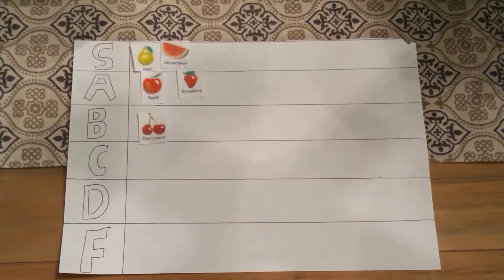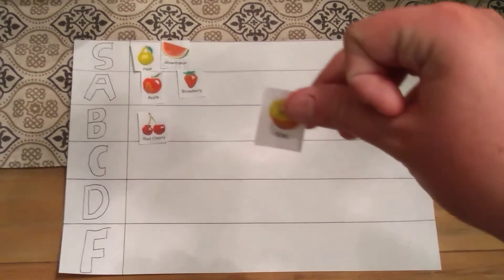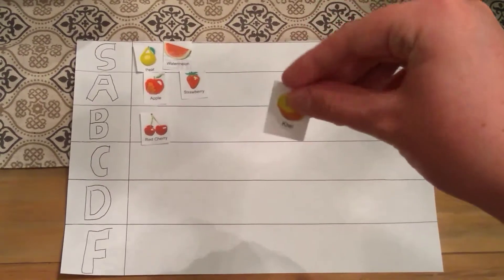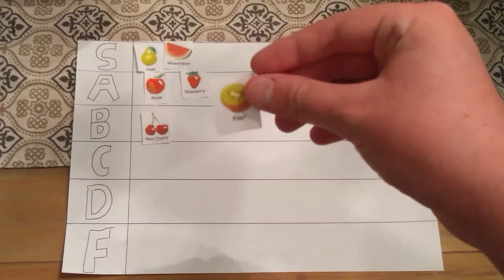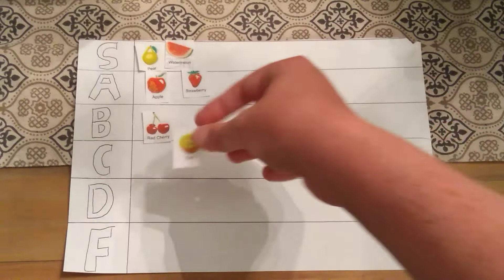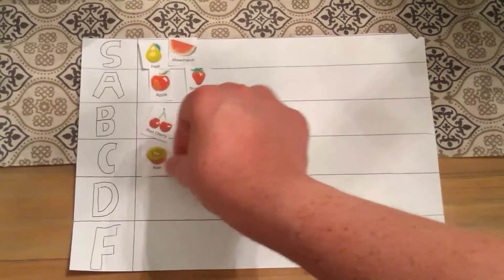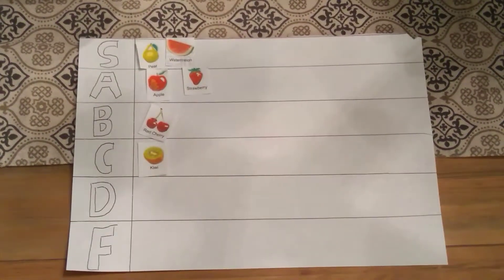Next up, we have kiwis. Which was one of the things I just tried. And I didn't like them that much. They were pretty, not that good. Which is why they're going in C tier. If someone forced me to eat it, I would eat it.